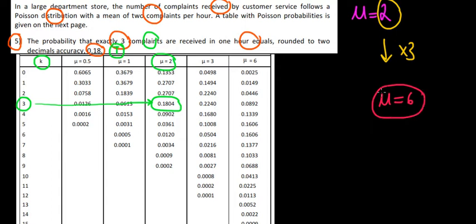Again, always thinking the event that we are interested. It's the complaints that we're interested, not in the hours. The hours is the time interval and the mean is showing us how much is happening in that time interval.